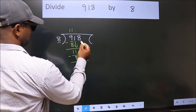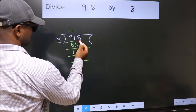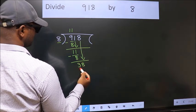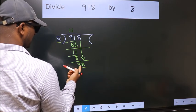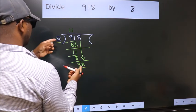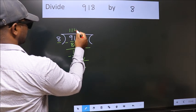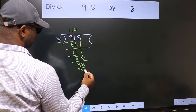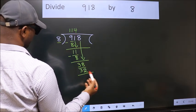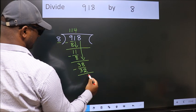After this, bring down the beside number. 8 down. So, 38. A number close to 38 in the 8 times table is 8 times 4, which is 32. Now we subtract. We get 6.